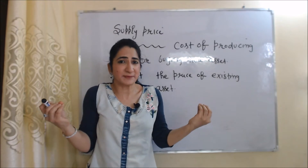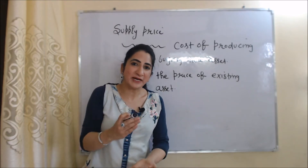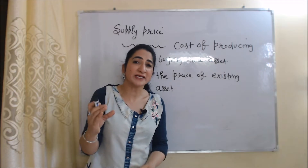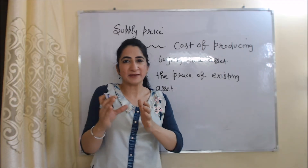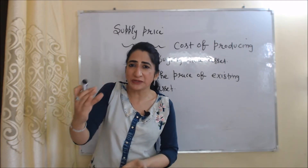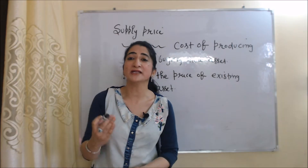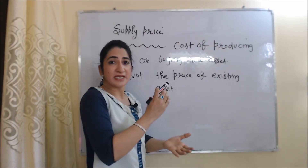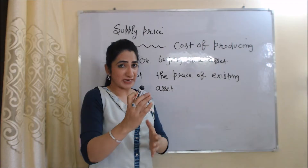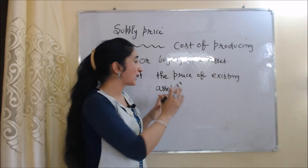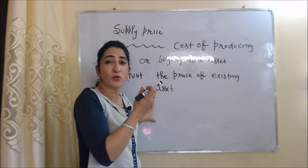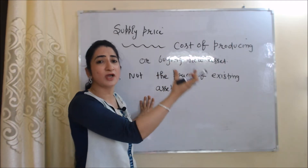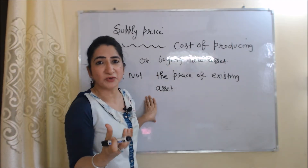Now we will see what is supply price. Supply price is the cost of producing or buying a new asset — note, not the price of an existing asset. In the case of supply price, we do not include the price of existing assets; we only include the cost of producing or buying a new asset.